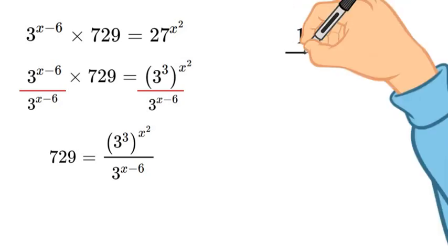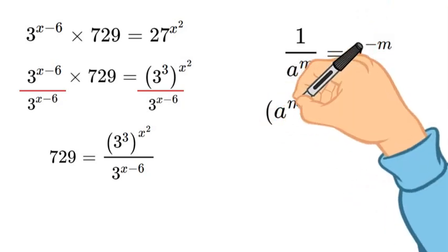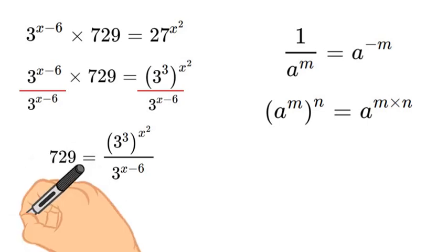Once we have done that we are going to apply a few exponent properties. So the first one is 1 over a to the m which is equal to a to the negative m. We're going to apply that to the bottom part of the equation and then we're also going to apply a to the power of m to the power of n is equal to a to the power of m times n. We're going to apply that to the top of the fraction. So let's go ahead and do that.